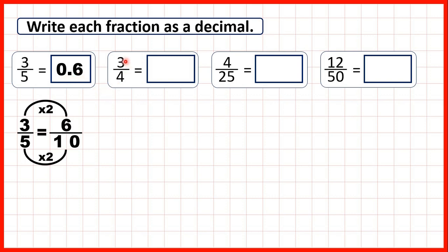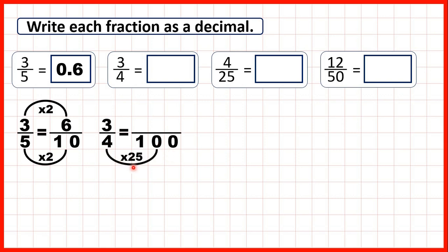Next we have three-quarters. Here we can't change three-quarters into tenths, because ten is not a multiple of four — it's not in the four times table. But one hundred is a multiple of four, so we can change three-quarters into hundredths. Now four times twenty-five is a hundred.